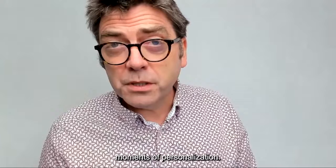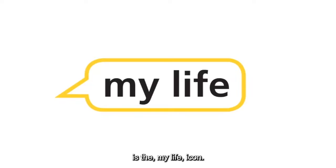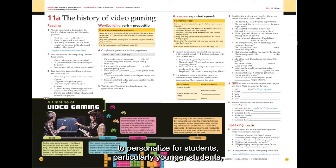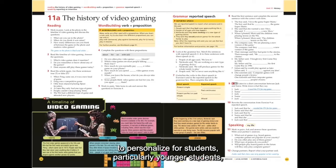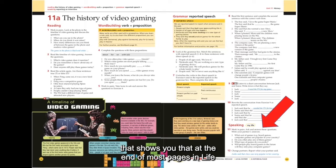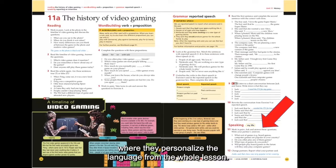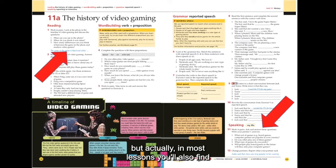Let me share a page from the Life book and show you where you might find moments of personalization. One thing to look out for is the 'My Life' icon — that's an indication that personalization is happening on the page. Looking at an actual page from a unit on the history of video gaming, you can see the red arrow at the end of the page, which shows that at the end of most pages in Life there's a 'My Life' icon connected to a speaking task where students personalize the language from the whole lesson.